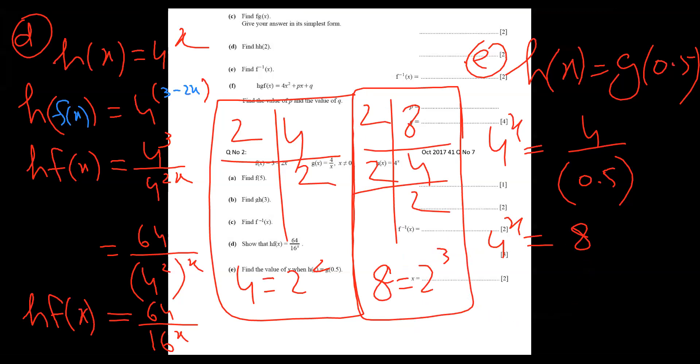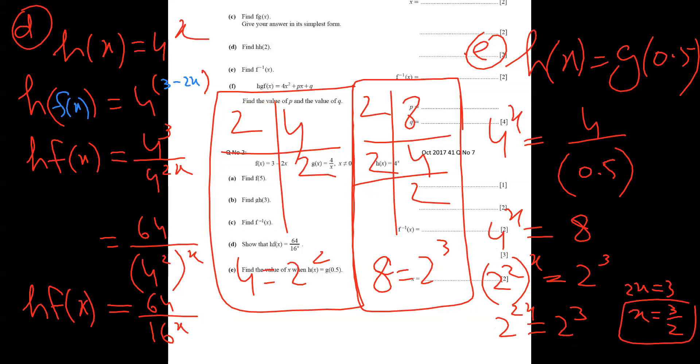And power to power, they multiply. It becomes two X equals two to power three. And you know rule, if bases always match, we leave it and take powers. So I can say here, two X equals three. And X equals three by two. And this is my final answer. Yes, I think the question is very, very clear.